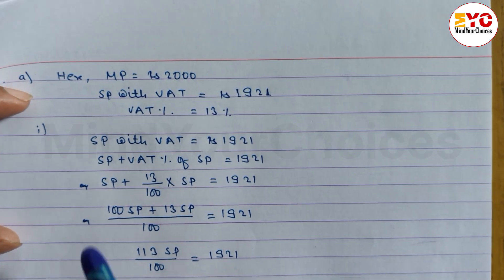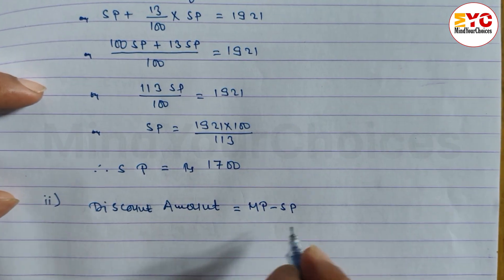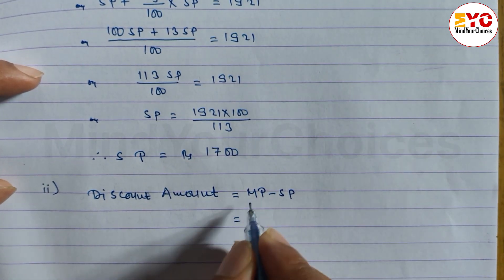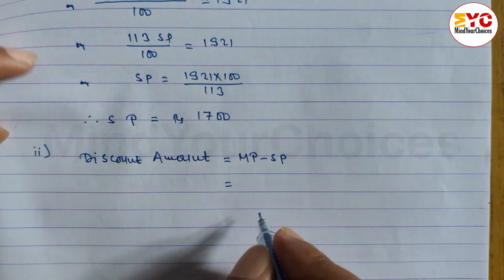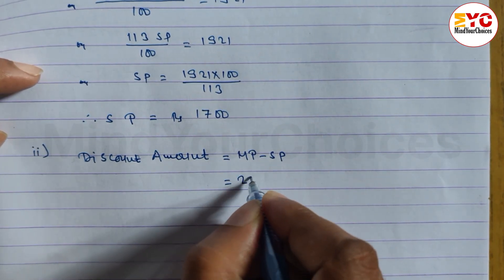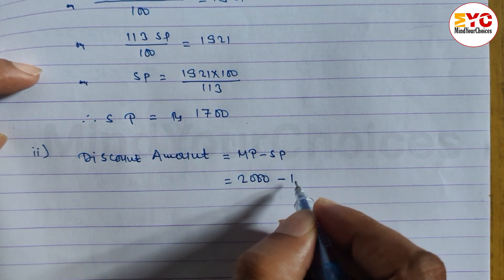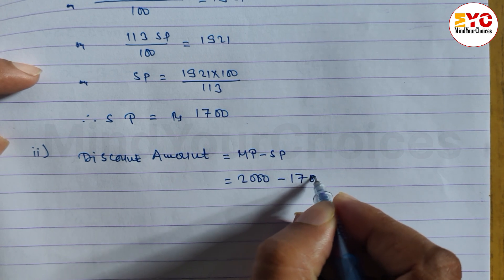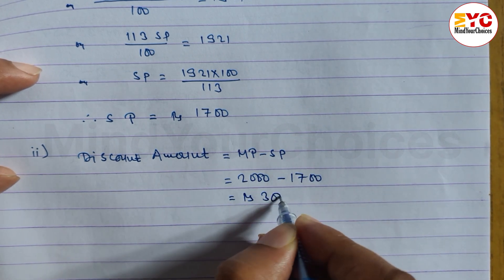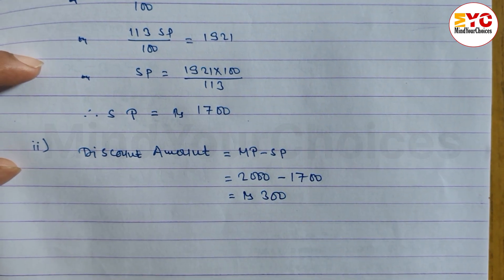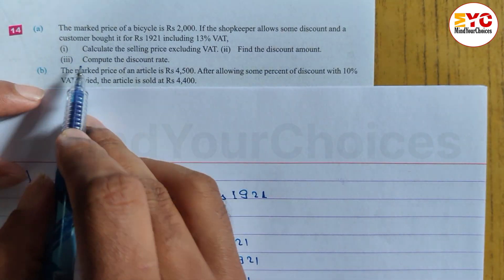For question number 2, we find the discount amount. The formula is: Discount = MP − SP. MP is 2000 and SP is 1700, so 2000 − 1700 = 300. The discount amount is Rs. 300.